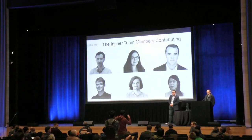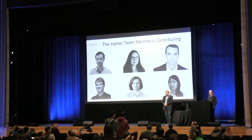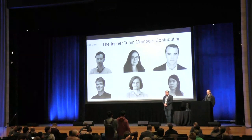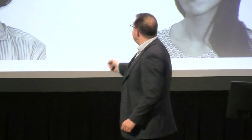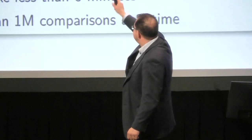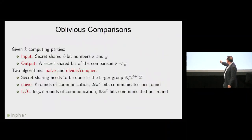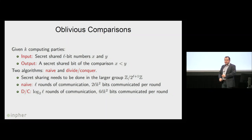Second question: how many parties were involved in the computation, and how were the timings benchmarked? The timings are for two and three parties — a small number. K is the number of parties in the complexity of the oblivious comparison, and the complexity scales quadratically with k.